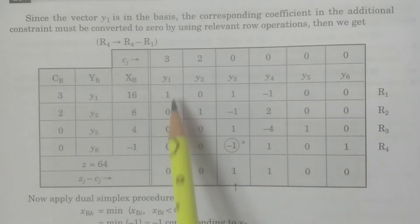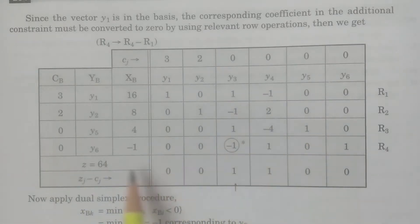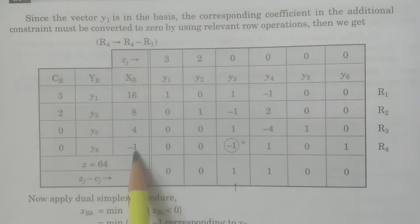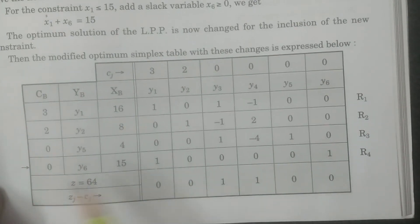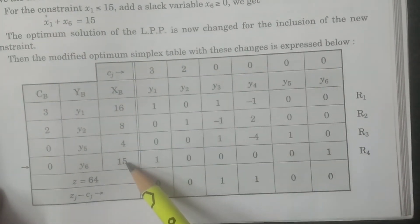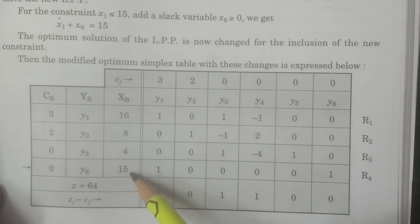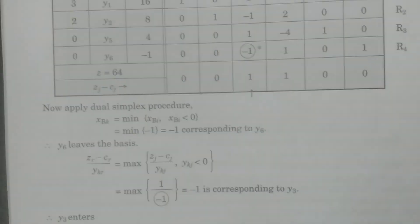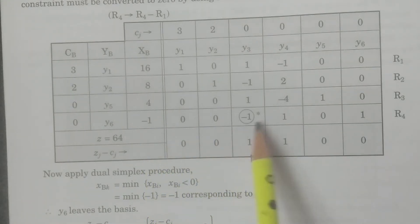By using the relevant row operation R4 = R4 − R1, you get the updated table. Observe the last row — corresponding to y6, it becomes: −1, 0, 0, −1, 1, 0, 1. The remaining values stay as usual.